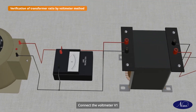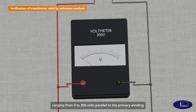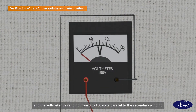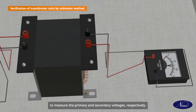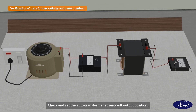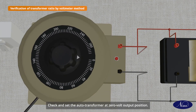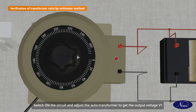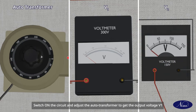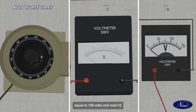Connect the voltmeter V1 ranging from 0 to 300 volts parallel to the primary winding, and the voltmeter V2 ranging from 0 to 150 volts parallel to the secondary winding to measure the primary and secondary voltages respectively. Check and set the auto transformer at 0 volt output position.